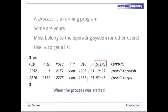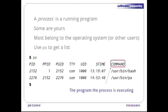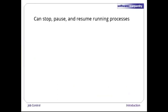Finally, column 6 shows when the process started running, and column 7 shows what program the process is executing. Your version of ps may show more or fewer columns or may show them in a different order, but the same information is generally available everywhere. The shell provides several commands for stopping, pausing, and resuming processes. To see them in action, let's run our analyze program on our latest data files.